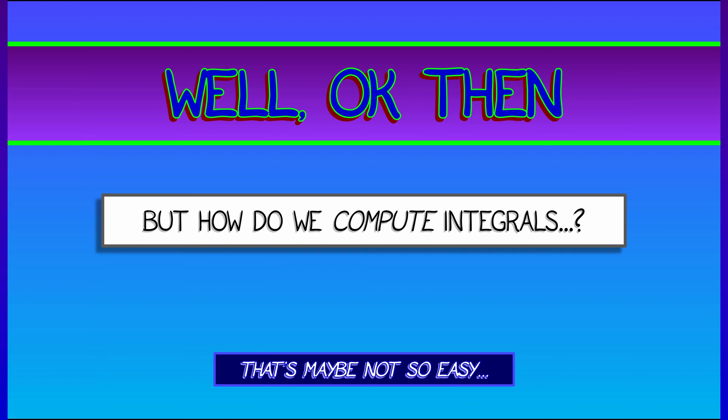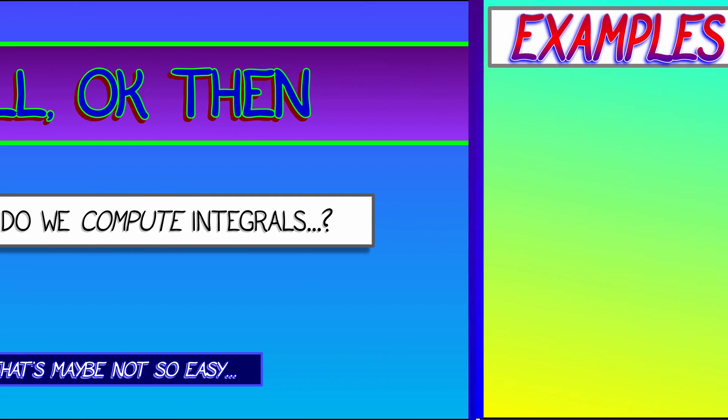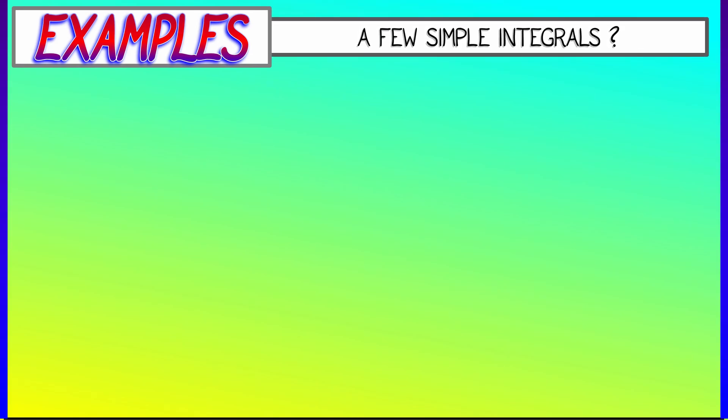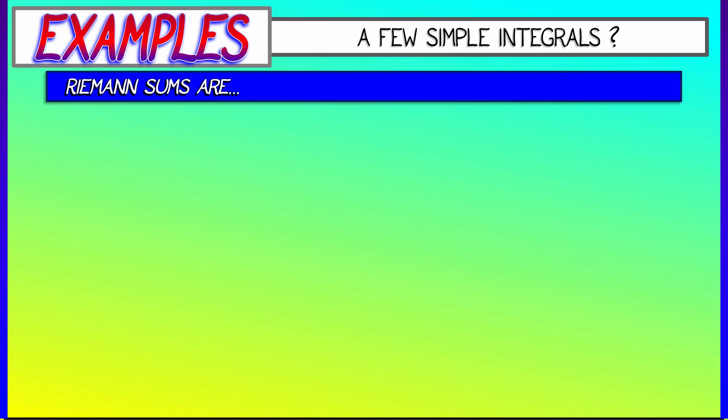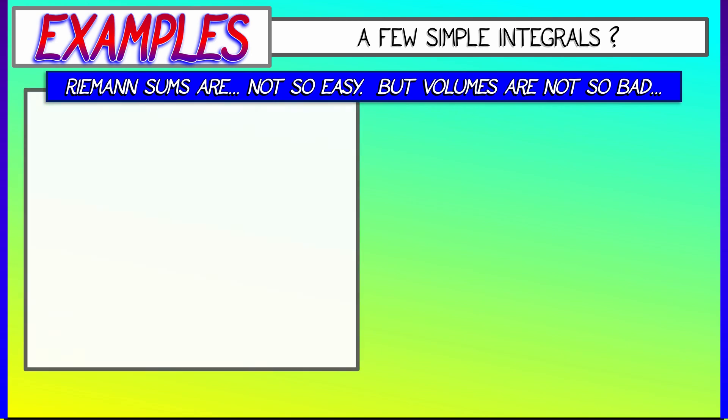Well, we're going to answer that question in the next chapter more fully, but for now, let's just stick to a simple example or two, something that we can integrate. Since Riemann sums are so difficult, we need to fall back to something that makes sense, and one thing that makes sense is volume.